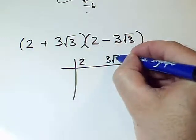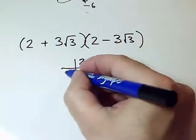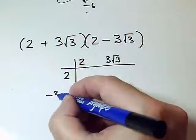First bracket, 2, 3 root 3. Sorry, 3 root 3, I should say. Other bracket, 2 and minus 3 root 3.